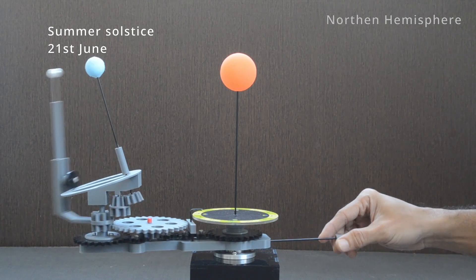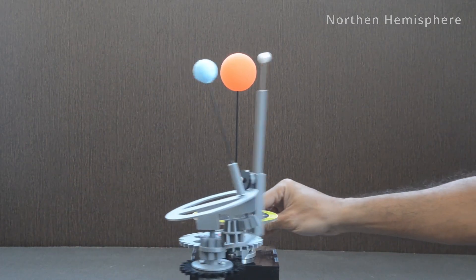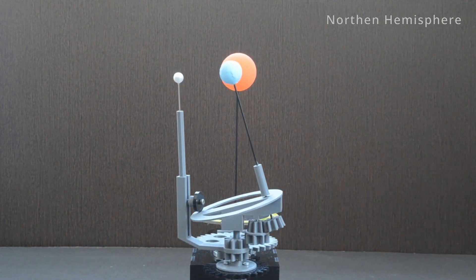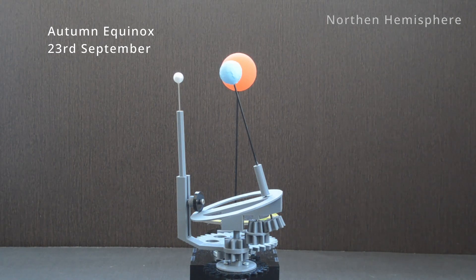For Northern Hemisphere, Summer Solstice on 21st June, Autumn Equinox on 23rd September can be shown.